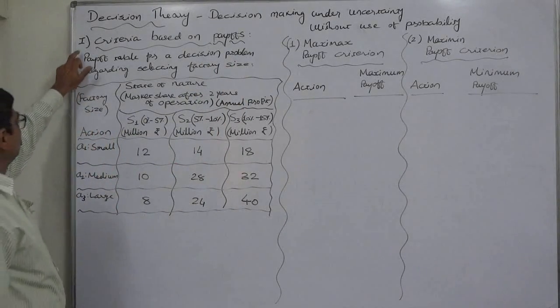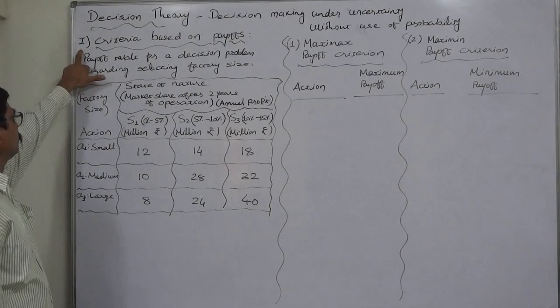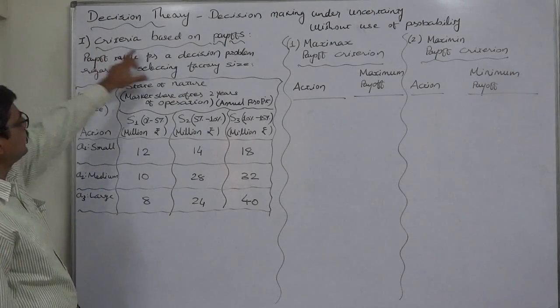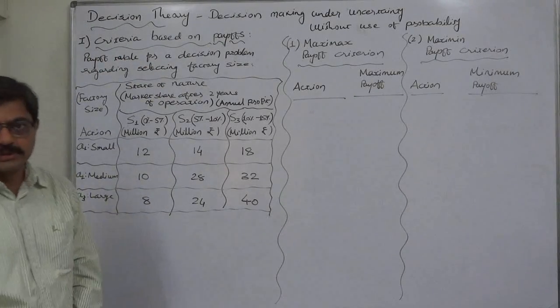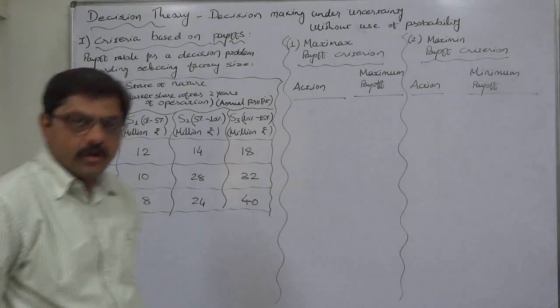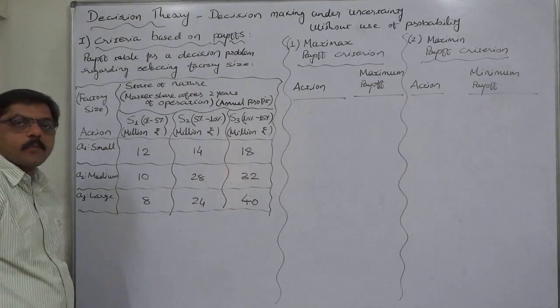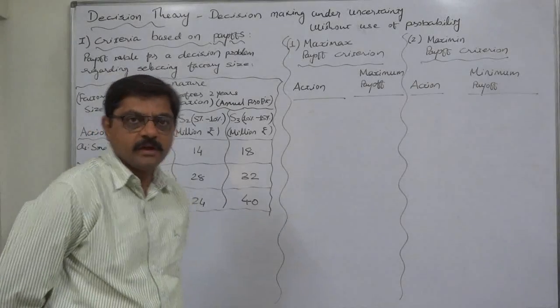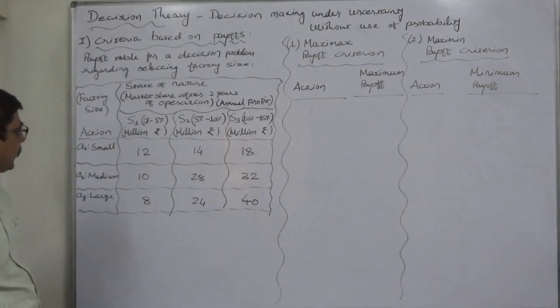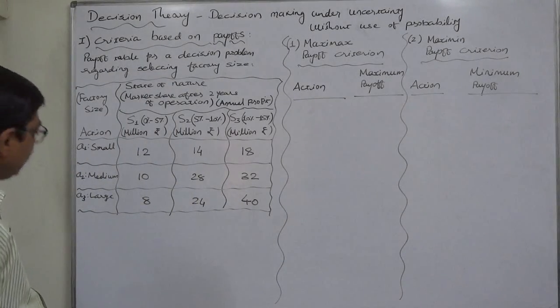We are first going to discuss the criteria based on payoffs. Generally, the term payoff is used to indicate profit or gain as a result of a particular decision. The case against us is the decision about or decision regarding size of a factory is to be taken.